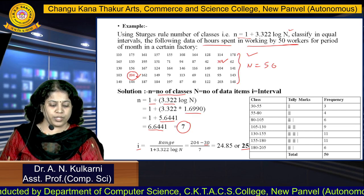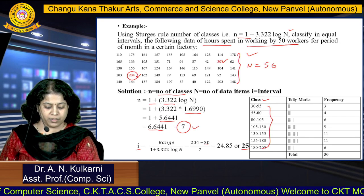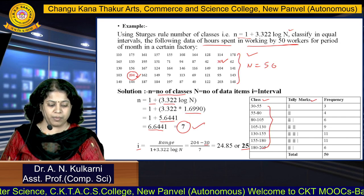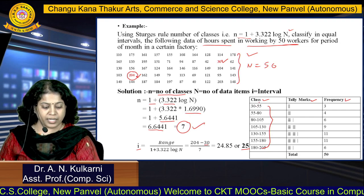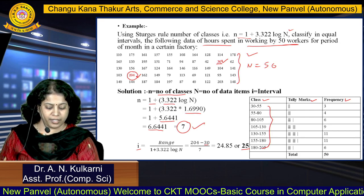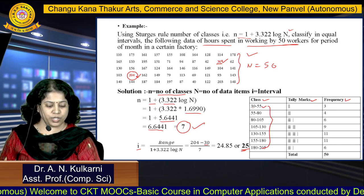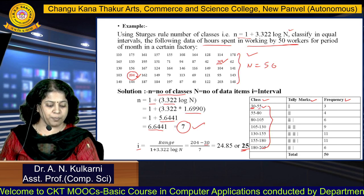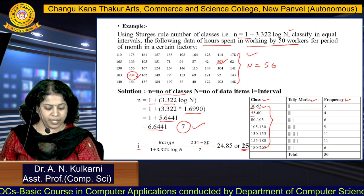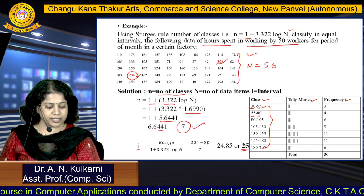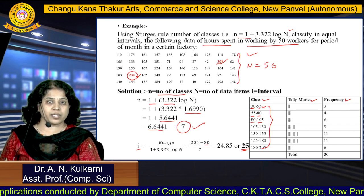Now construct the frequency table. There are 7 classes. Start from 30; since the range between classes is 25, 30 + 25 = 55, so the first class is 30 to 55. Next starts from 55: 55 + 25 = 80. Then 80 + 25 = 105, and in this way you can calculate all the class values.